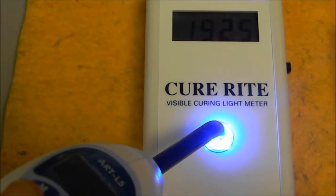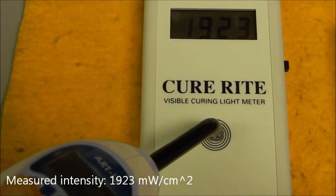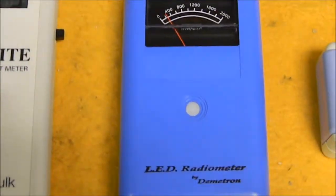We have a power measurement of 1900 milliwatts per centimeter squared. Next, we'll test the LED radiometer from Demetron.